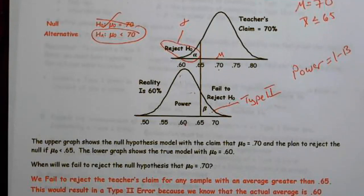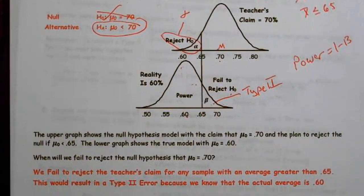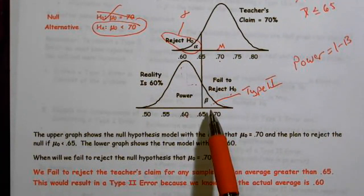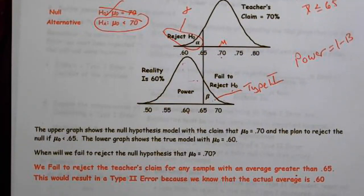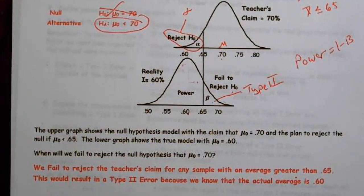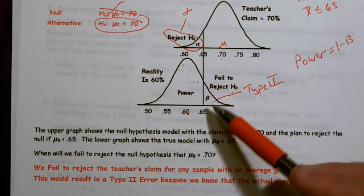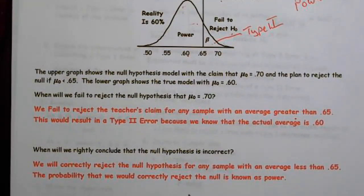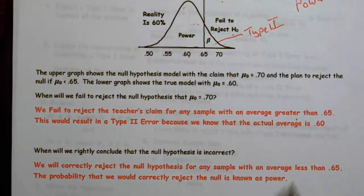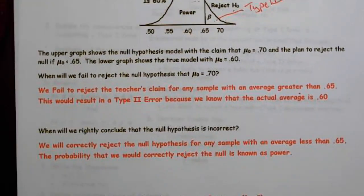So the upper graph shows a null hypothesis model with the claim that mu is 70 and the plan to reject. We fail to reject when we get an average greater than 65. This would be a type 2 error because we know the actual average is 60. When will we rightly conclude that the null hypothesis is incorrect? We'll correctly reject the null hypothesis for any sample with average less than 65. And that is our power.